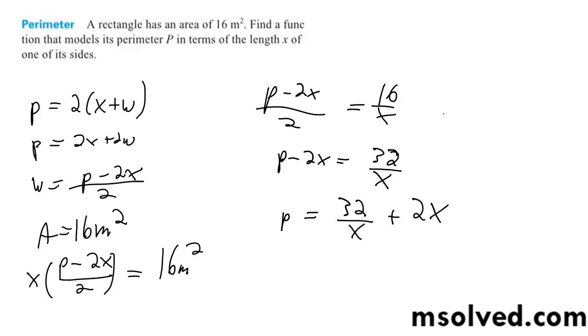Or we can simplify it down to just p is equal to 2 times the quantity 16 over x plus x. That's it.